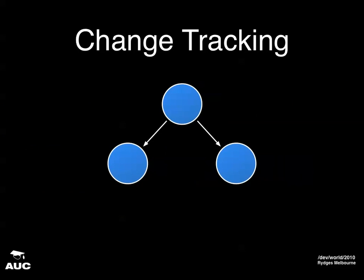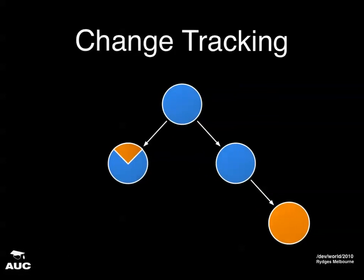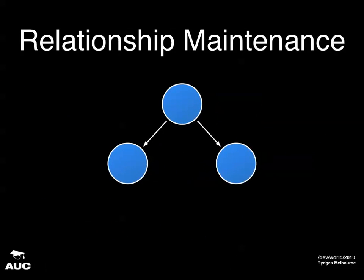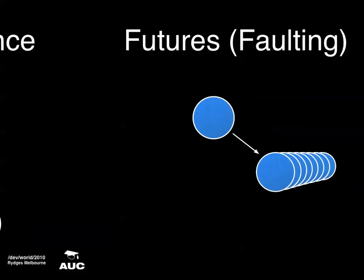Change tracking: you can have an object graph, create a new object and add it to the graph, or change one of the properties of an existing object. Core data keeps track of those changes and can undo them for you, or alternatively you can ask core data to persist those changes to disk. Relationship management: you add a new object to the graph and core data can automatically manage those relationships, creating the relationship back from the child to its parent.